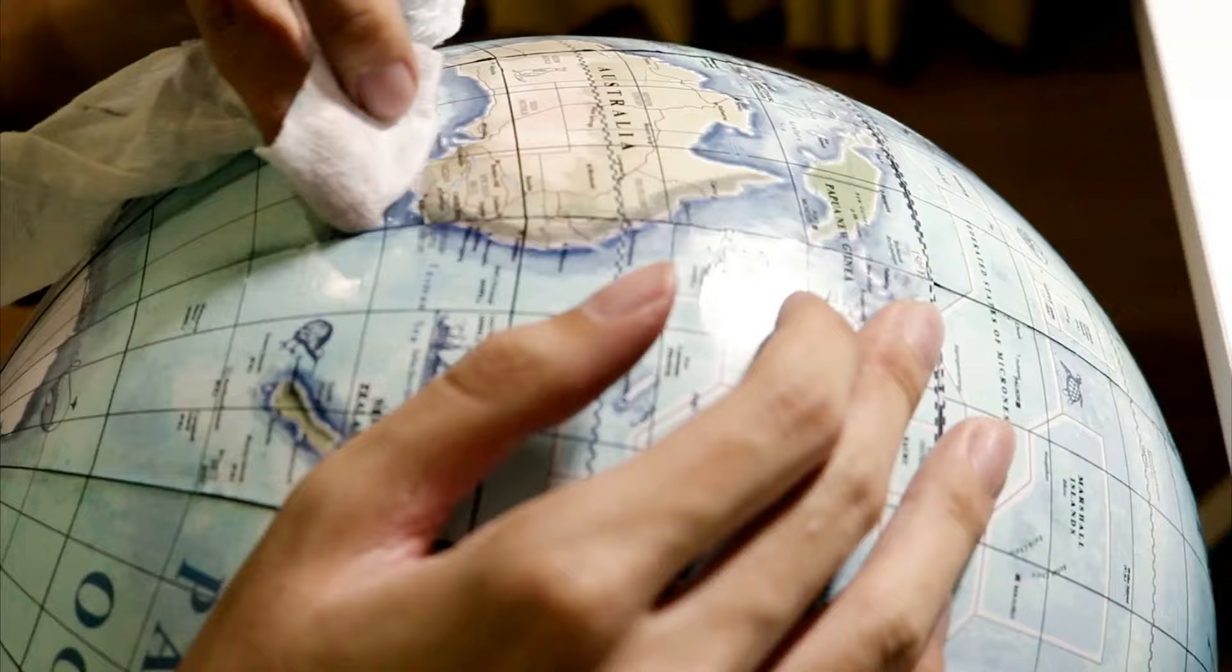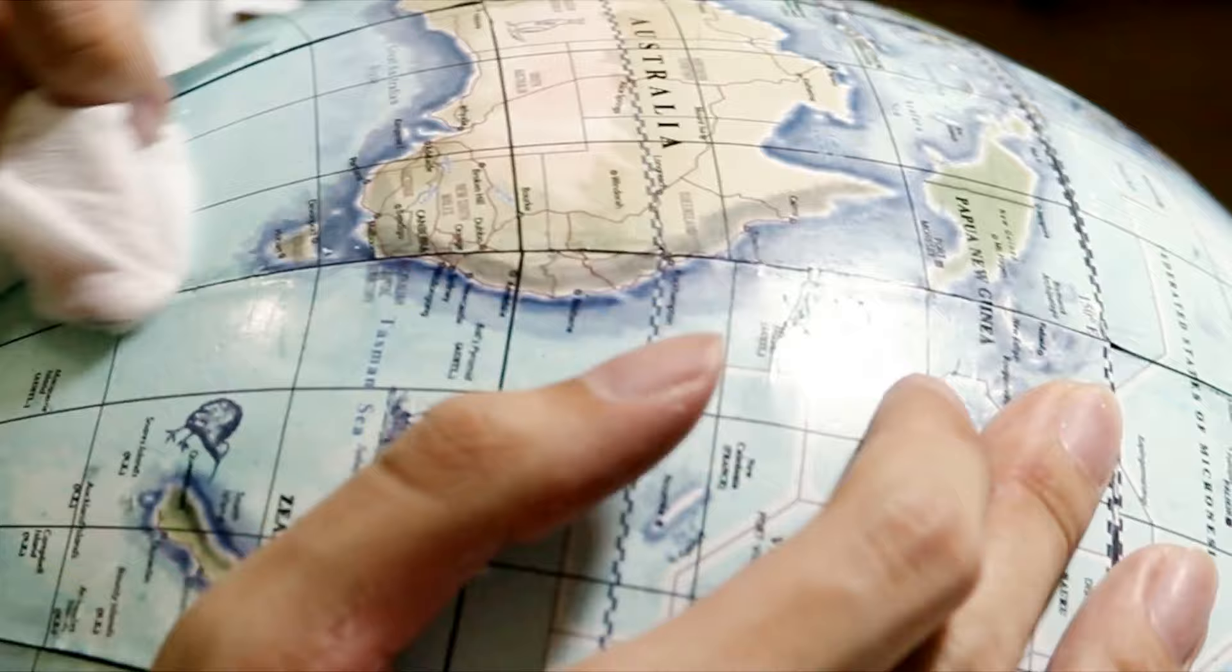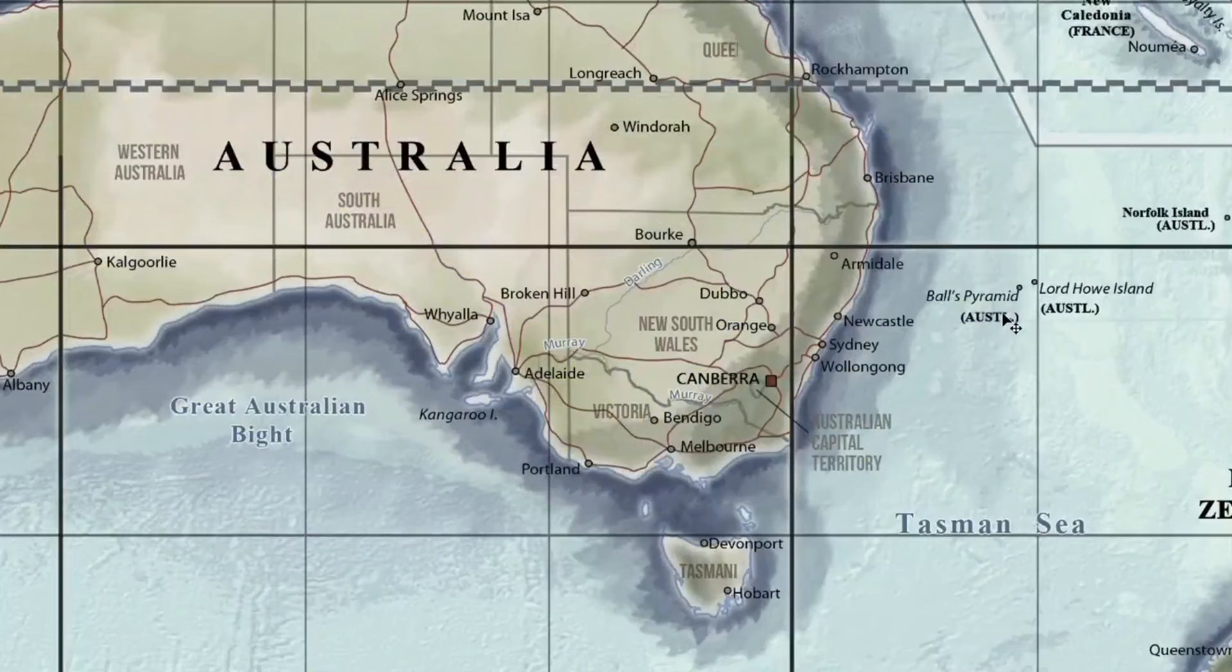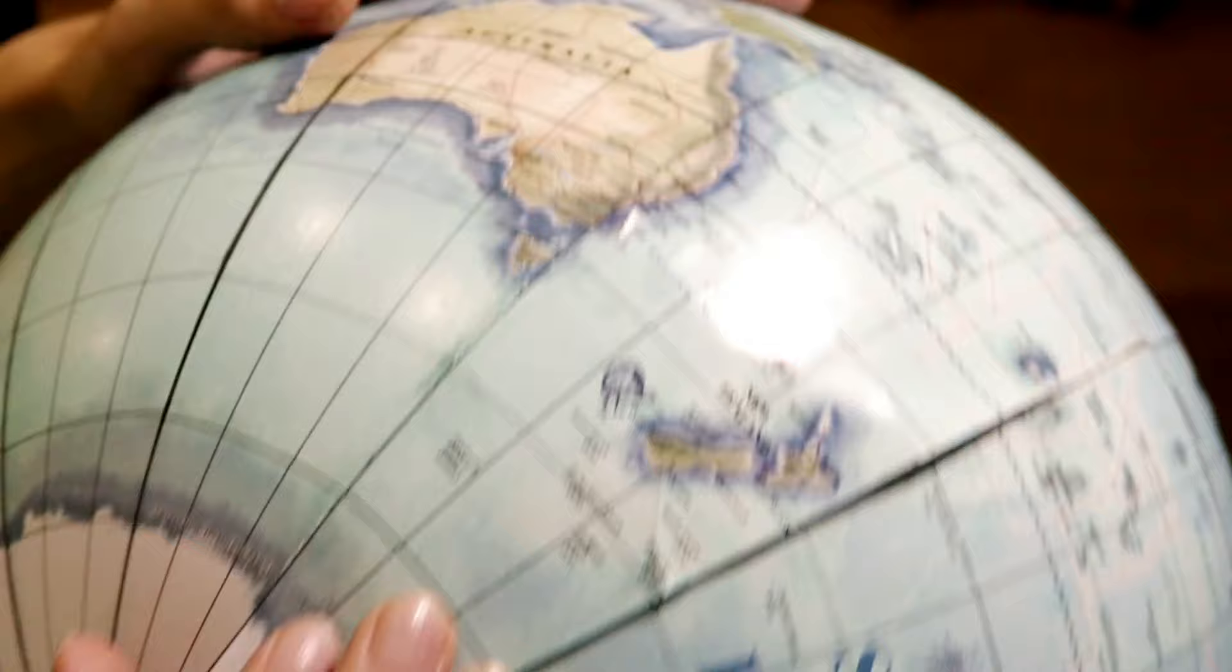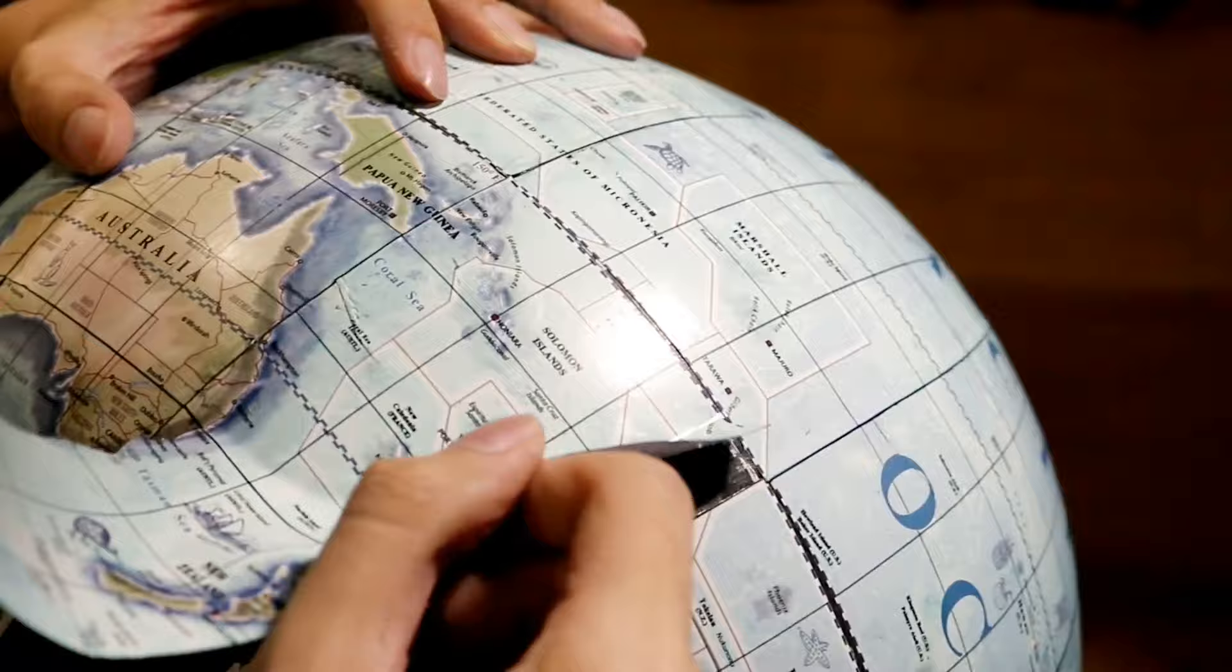And stupid me overlapped the last gore over the previous one. I pretty much eliminated every city along this longitude from existence, so I had to redo the last 2 gores. No big deal, as if I failed five times. Seriously, this is nothing.